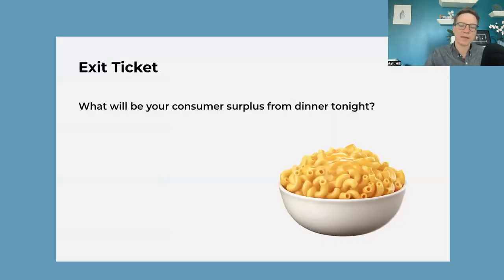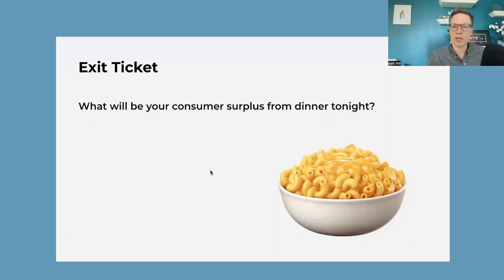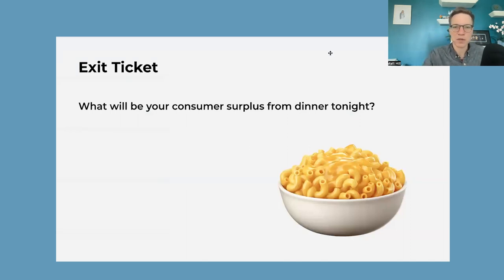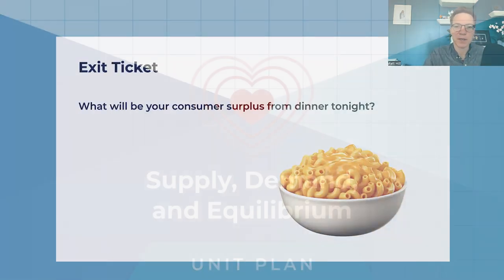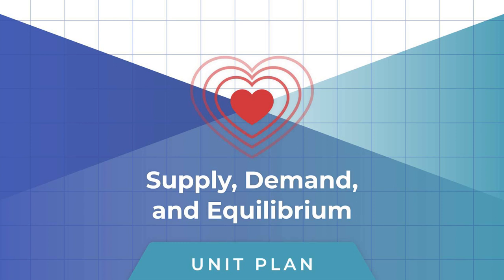Exit ticket: dinner tonight — make yourself happy. Think about your consumer surplus as you sit down to a delicious bowl of mac and cheese or whatever you may eat for dinner. Get our supply, demand, and equilibrium unit plan here, or click for the next video.